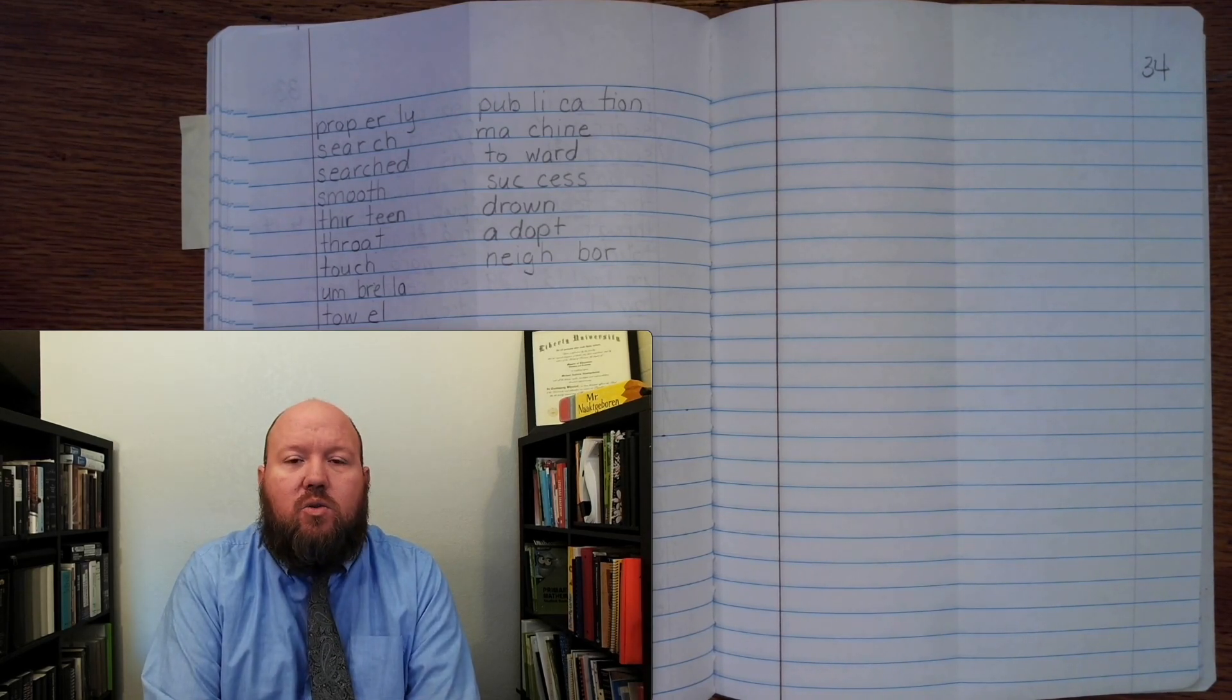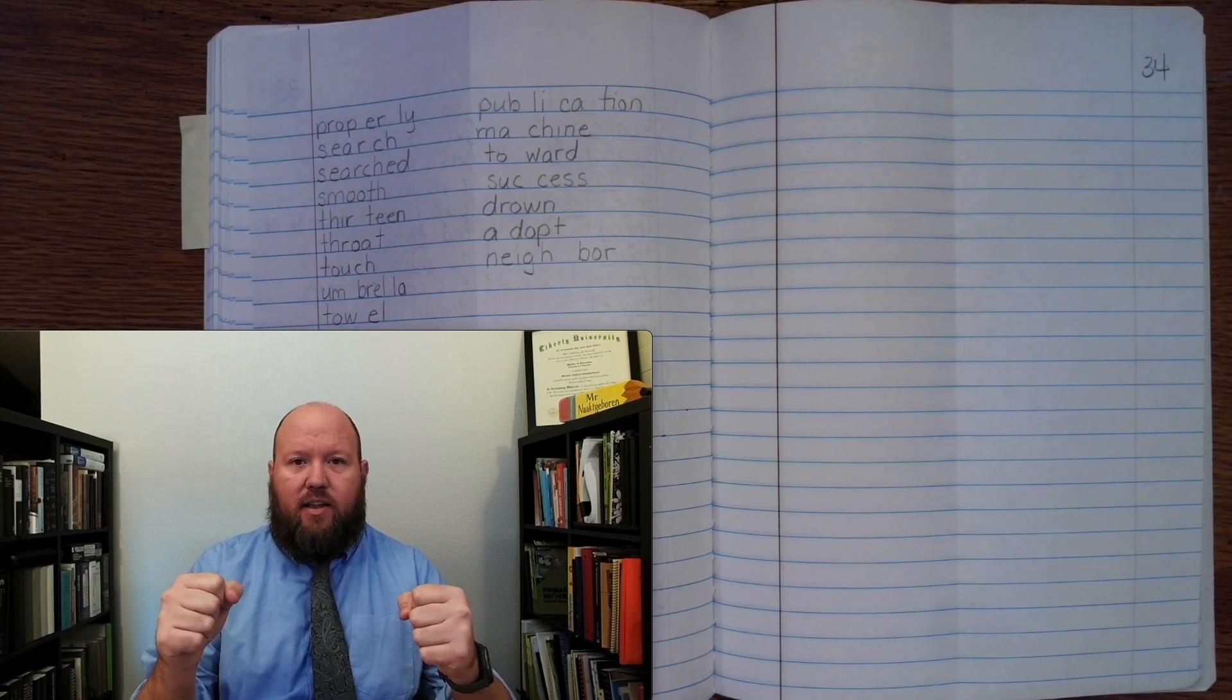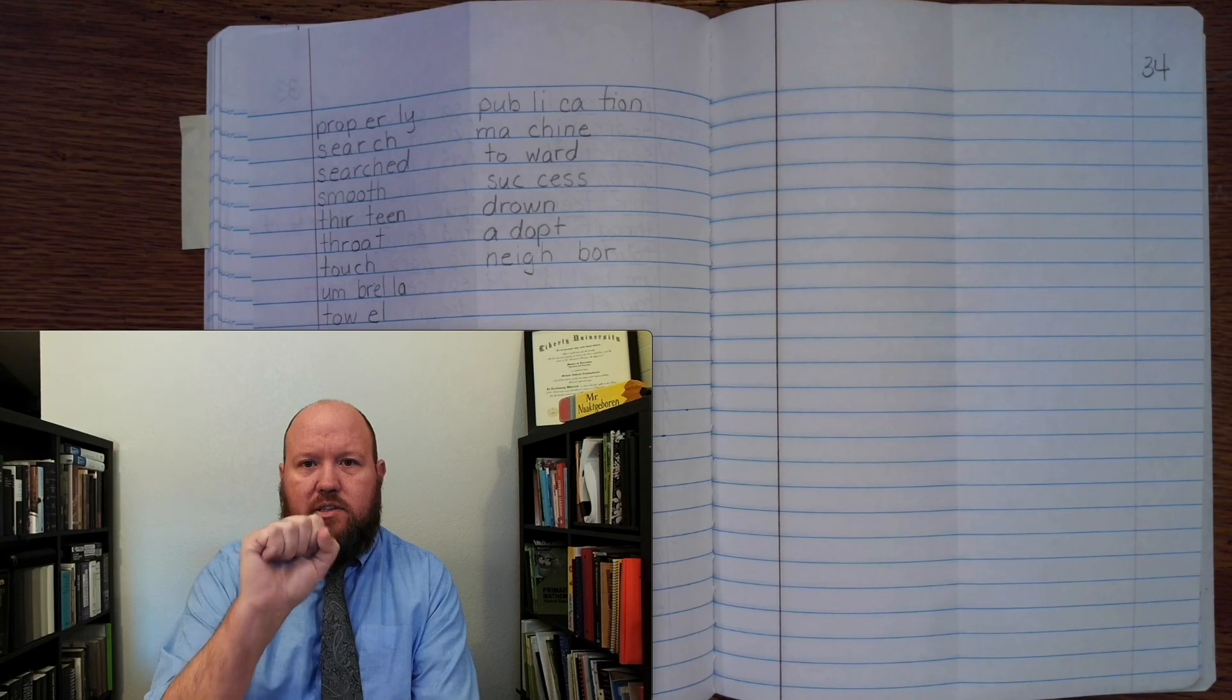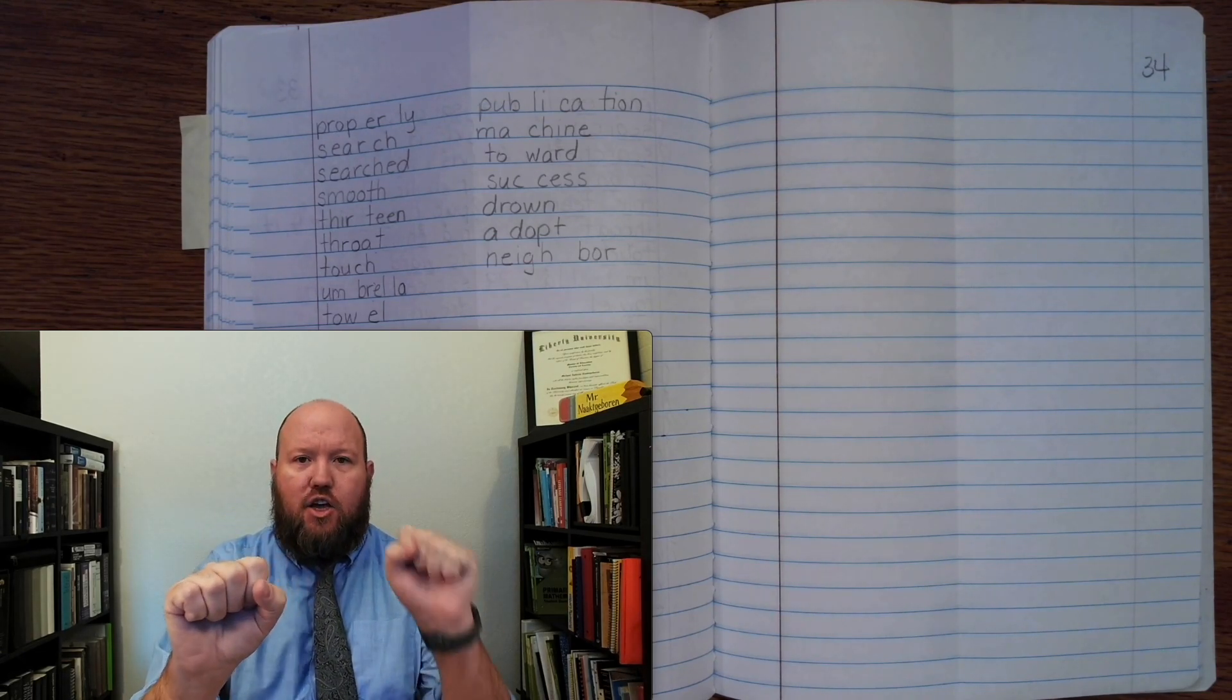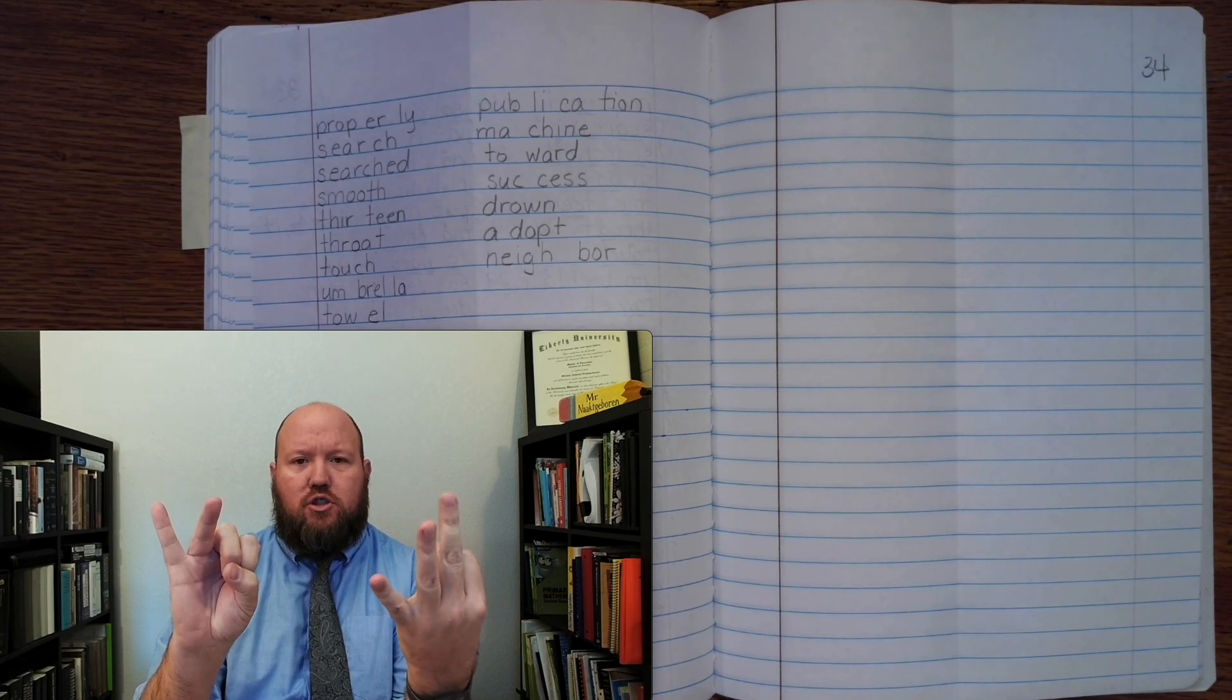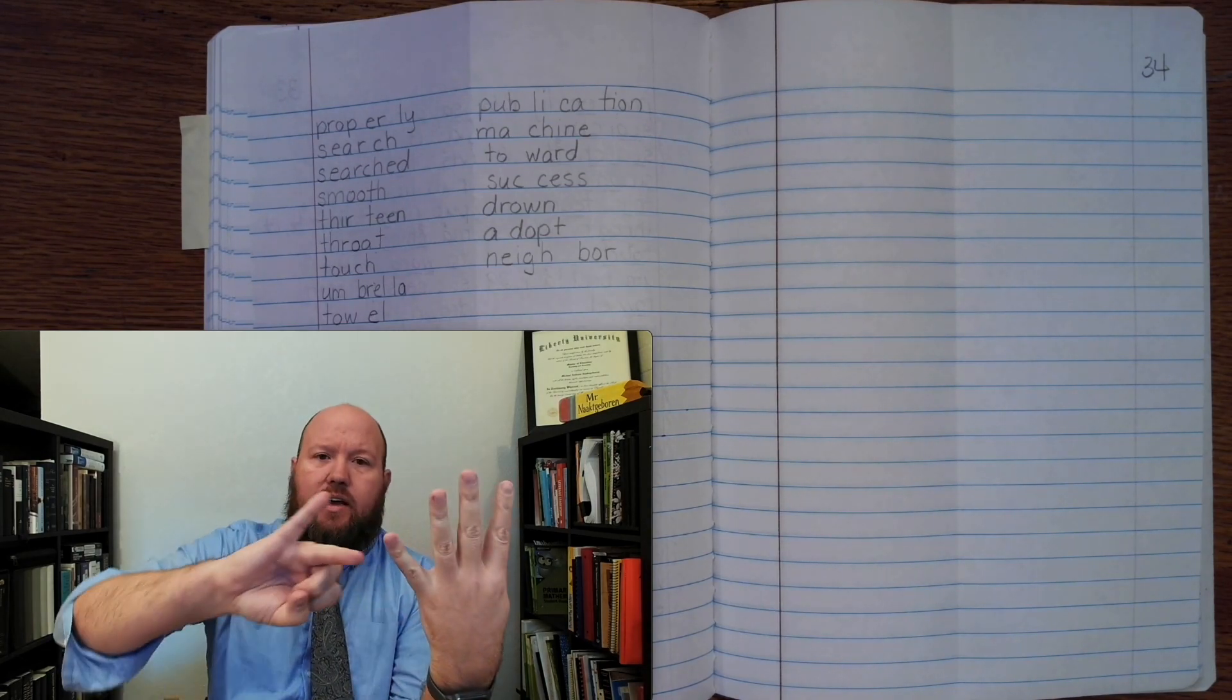Now, the first word is the word secure. So secure means to make sure you have something that it can't get away from you. Secure. Base word, secure. C-cure. S-E-C-U-R-E. Secure. So here's going to be an S, and this is going to be a C.